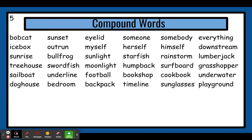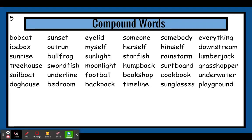Let's go ahead and read this first line. Try and read it before I do. Bobcat. Sunset. Eyelid. Someone. Somebody. Everything.